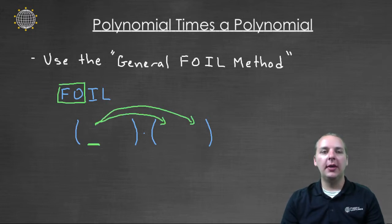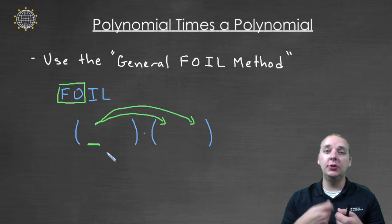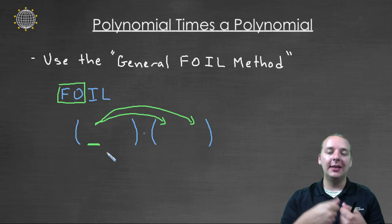Well here, look at this though. If you group the F and the O, the first and the outer, look at what you're basically doing. You're basically taking the first term and distributing it to the first term in the second polynomial and the last term in the second polynomial.